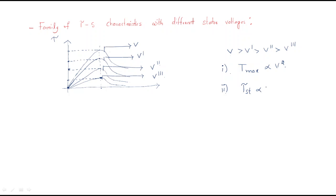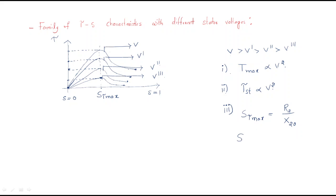What about starting torque? Starting torque is also proportional to supply voltage squared. So initially the starting torque is high, and as voltage decreases, the starting torque decreases as well. Regarding slip at torque maximum: it is the same for all voltage cases, because slip at torque maximum equals r2 / X2, which depends only on rotor resistance and rotor leakage reactance — not on supply voltage.